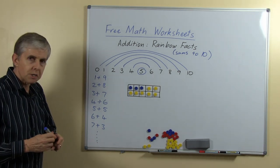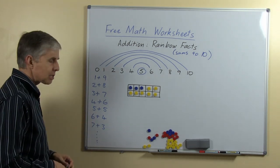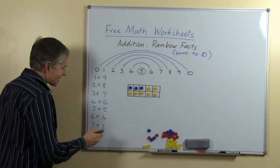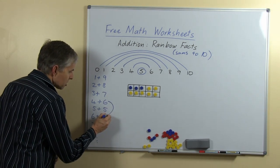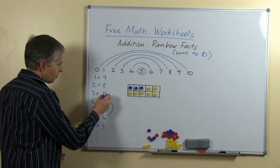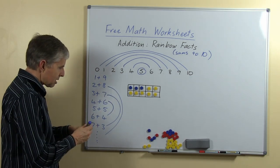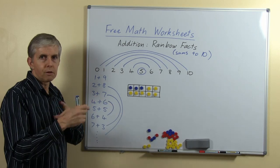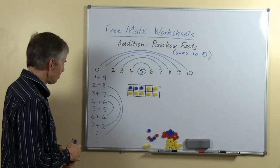Another thing the students may notice, and I'll probably ask them what else can you see, is that the pairs are repeated in reverse order. We have 4 and 6 and 6 and 4, we have 3 and 7 and 7 and 3, and of course that's the general principle of reversing addition number facts.